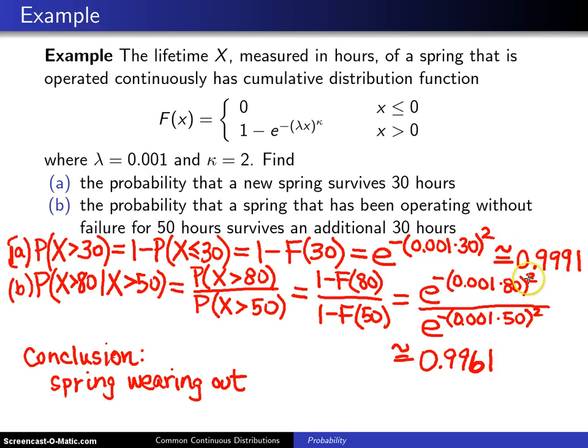the conclusion here is that the spring is wearing out. A new spring is better than a used spring, and in the Weibull distribution, whenever you choose a kappa value that is greater than 1, you will have a lifetime where a new item is preferred to a used item, which is the same as saying that the item is wearing out.